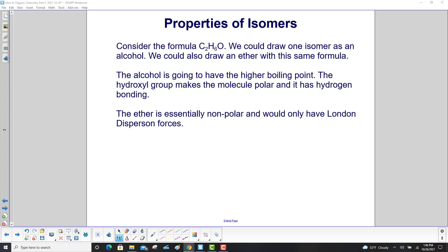Consider the formula C2H6O. We could draw one isomer as an alcohol. We could also draw an ether with the same formula. The alcohol is going to have the higher boiling point. The hydroxyl group makes the molecule polar and it has hydrogen bonding. The ether is essentially non-polar. It would only have London dispersion forces.